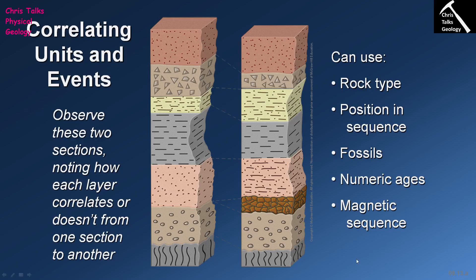Now the next thing we need to think about is how do we use this information to produce a geologic history. In terms of producing a geologic history for an area, what we'll do is we will literally work through our sequence of rocks one by one, working out exactly how each of these layers were formed.